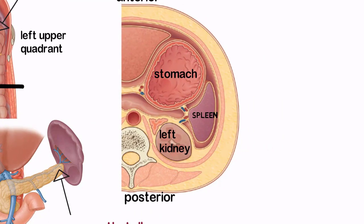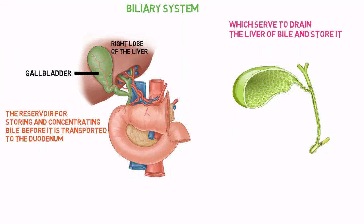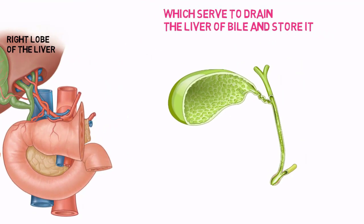The spleen is attached to the greater curvature of the stomach and the left kidney by the gastrosplenic and lienorenal ligaments, respectively. The gallbladder can be divided into a fundus, body, and neck.